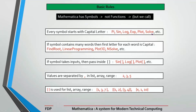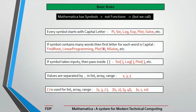The second rule: if a symbol contains many words, the first letter of each word is capital. For example, FindRoot — 'Find' is one word and 'Root' is another, so F and R are both capital. LinearProgramming — L and P are capital. Plot3D — P is capital. SolveN — S and N are both capital since Solve and N are different words.